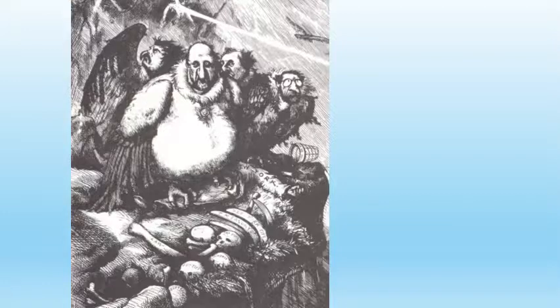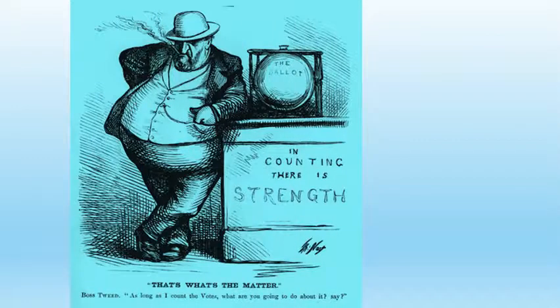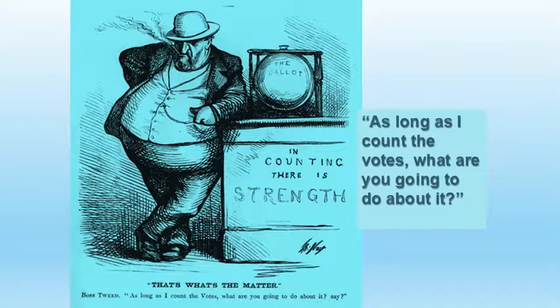Cartoons of Boss Tweed show him in an unflattering light — portrayed as a vulture. In one cartoon, everyone is pointing fingers at somebody else while Tweed, literally the large guy in charge, stands over it all. Because he controlled voting and counted the ballots, he and his cronies always won. His guys would grow beards, go vote, shave a little, vote again, shave more, vote again, until finally clean-shaven and voting one last time. Tweed always won — as long as he counted the votes.